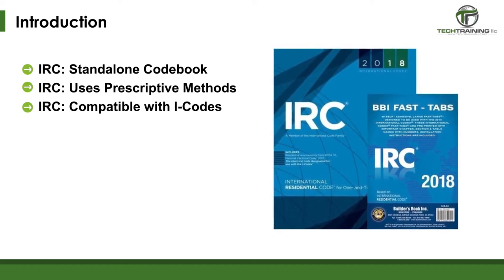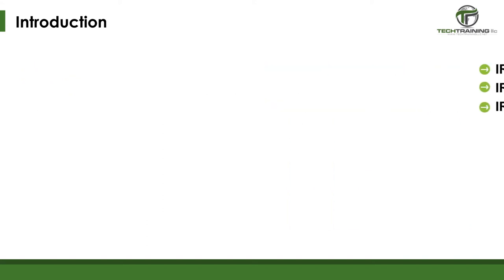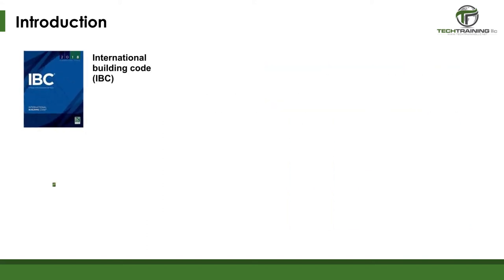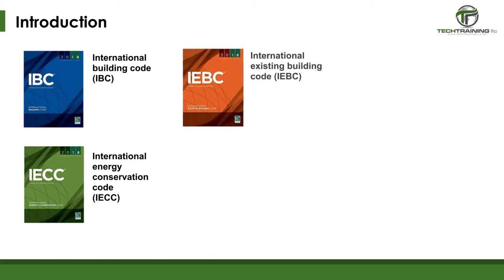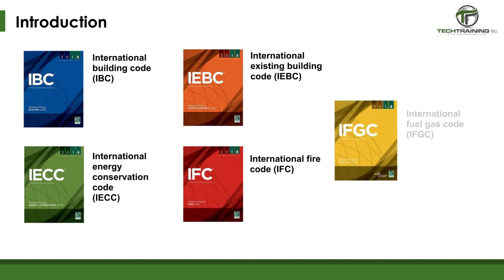Though the IRC is a standalone codebook which establishes minimum regulations for one- and two-family dwellings and townhouses using prescriptive provisions, it was founded on the principles that make possible the use of new materials, new building designs, and new construction methods. The IRC is also fully compatible with all international codes, or I-codes, published by the International Code Council, the ICC. Some of these publications include the International Building Code, the International Energy Conservation Code, the International Existing Building Code, the International Fire Code, the International Fuel Gas Code, and others.